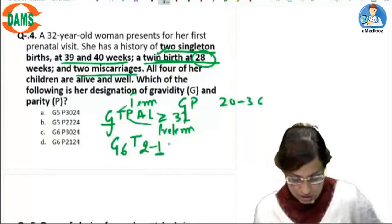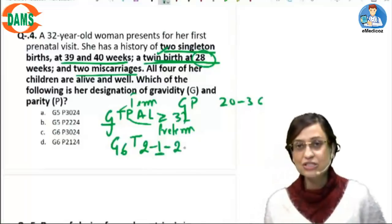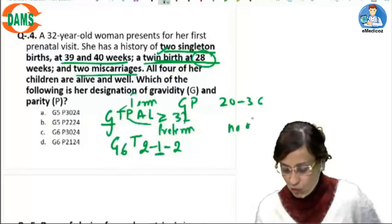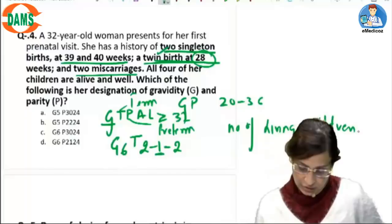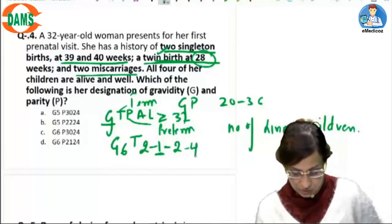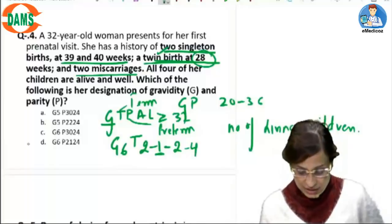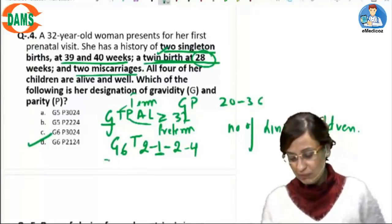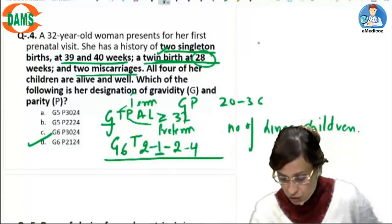Then abortion, she's had two abortions. And L stands for number of currently living children. So this is going to be four. So the answer is G6P2124. So remember the TPAL formula.